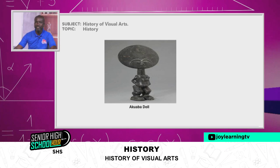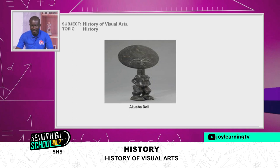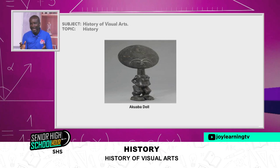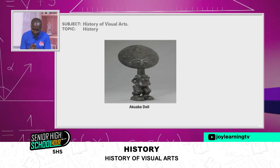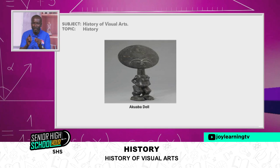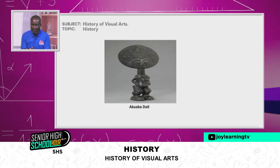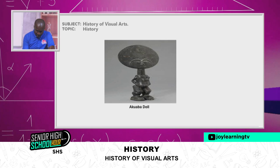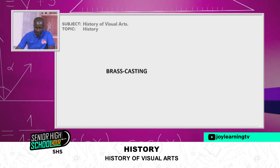In the picture is an Akuaba doll — a beautiful wood carving. Look at the neck with beads around it. This is a beautiful one, and the expectation is that any pregnant woman who carried this doll was going to give birth to a perfect, beautiful baby, just like the doll.